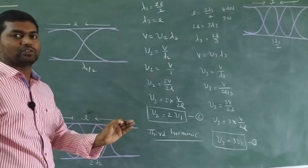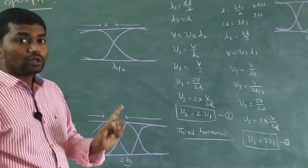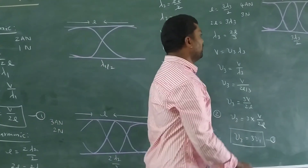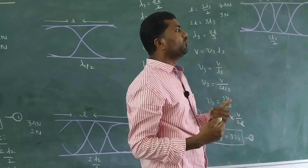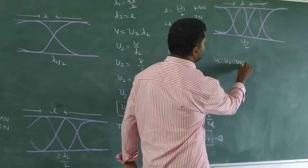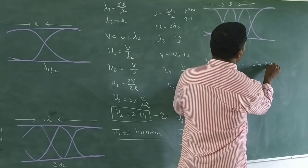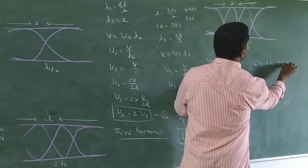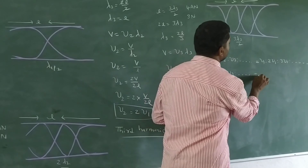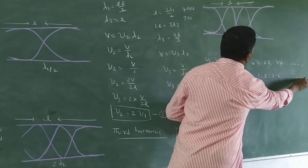The equations are: ν₁ equal to V by 2L (fundamental frequency, 1st harmonic); ν₂ equal to 2ν₁ (2nd harmonic); ν₃ equal to 3ν₁ (3rd harmonic). The ratios of frequencies of an open pipe are ν₁ : ν₂ : ν₃ : ... equal to ν₁ : 2ν₁ : 3ν₁ : ..., which simplifies to 1 : 2 : 3 : 4 and so on.